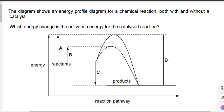In this question the diagram shows an energy profile diagram for a chemical reaction both with and without a catalyst. Which energy change is the activation energy for the catalyzed reaction? A catalyst brings down the peak of the activation energy. As you can see there are two peaks of activation energy shown in the graph. The one with the lower peak, which is B, is the activation energy peak for the catalyzed reaction. So the correct answer is B.